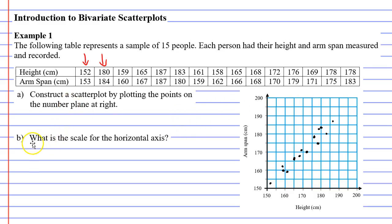Moving on to question B, it says, what is the scale for the horizontal axis? This is our horizontal axis here, and when we talk about the scale, we're just talking about what is it jumping up by each time. And we can see it's jumping up by 5s, because if we look at this particular point here, that's 155, and this is 5 more than 150. So each square represents 5 centimeters.